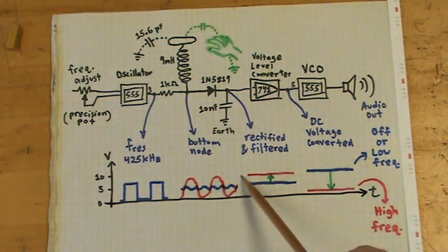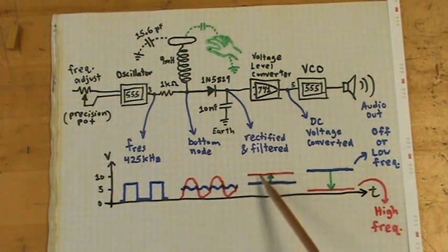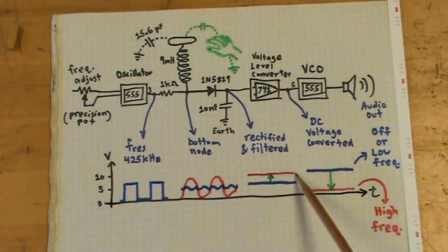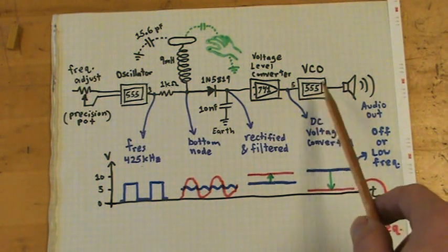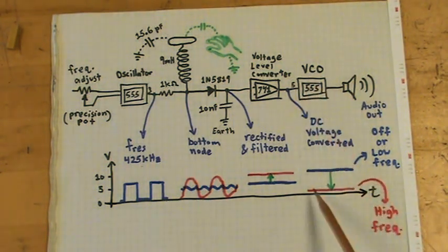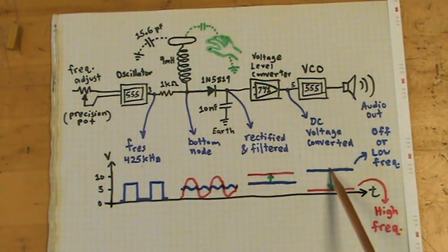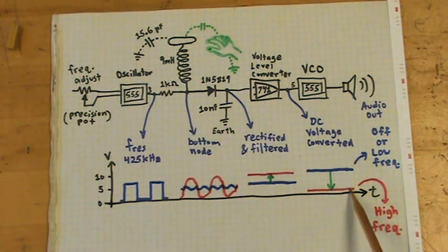If I rectify and filter that, then it's a smooth straight line at a little bit higher voltage. Then to convert that to a usable voltage for the VCO, I have to amplify it and invert it, so that'll make it go down to almost zero volts, and that'll give me a high frequency audio output.